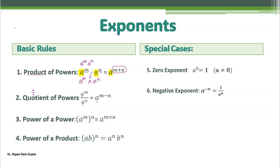We may also have a power of a power — like double powers: a power m and again power n. In this case, since we have only one base, we write the base and multiply the powers. Note the difference from rule one: in rule one we have two different terms and add the powers; here we multiply the powers because we have only one base.